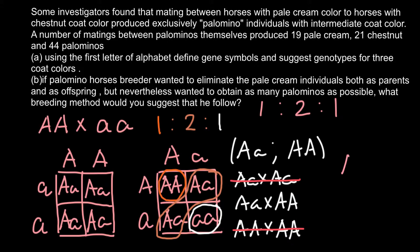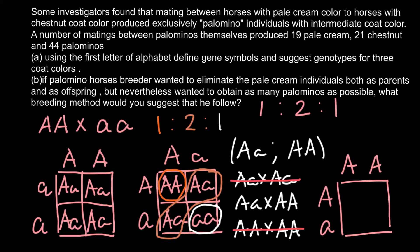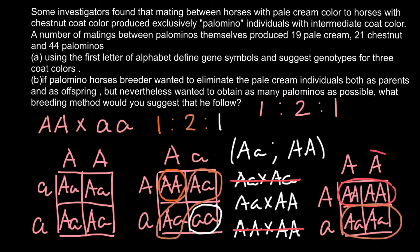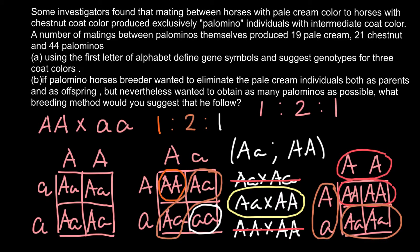That leaves only one option: crossing chestnut (capital A capital A) with Palomino (capital A small a). The Punnett square shows the progeny are capital A capital A (chestnut) and capital A small a (Palomino) — none of the parents are pale cream, and none of the progeny are pale cream either. This gives us 50% Palomino offspring, which is the answer to question B.